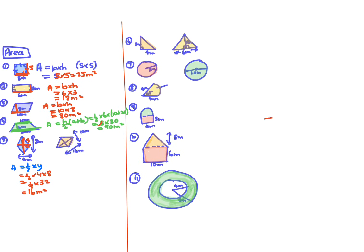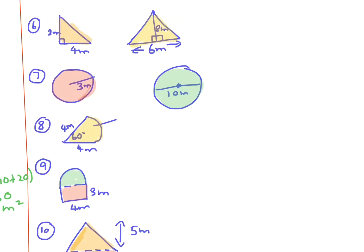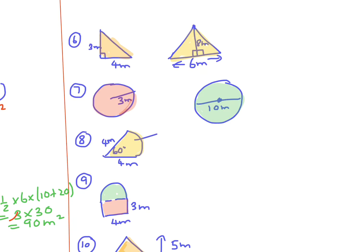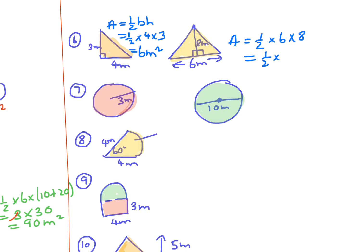Now looking at the other shapes. The first one is a triangle. The area of a triangle is a half times base times height, so it's a half times 4 times 3, which is a half of 12, giving 6 meters squared. The other triangle is a half times 6 times 8 — half of 48 is 24 meters squared.